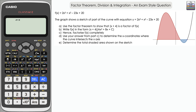We're going to be using full methods here with the calculator for support to verify our answers and give us confidence we're heading in the right direction. Starting with Part A: we need to use factor theorem to show that x+4 is a factor of f(x). With factor theorem, we're looking for that factor to equal zero to find a value of x to substitute into f(x), which should give zero if factor theorem holds true.